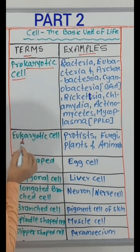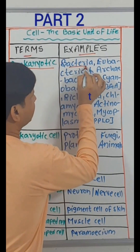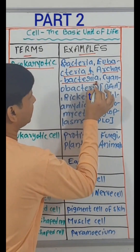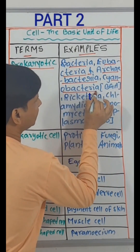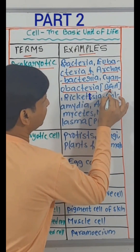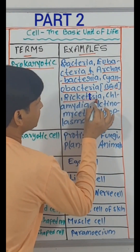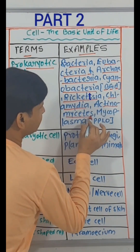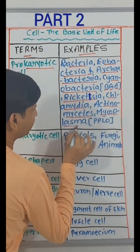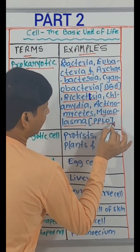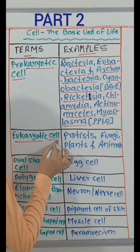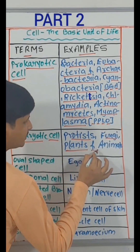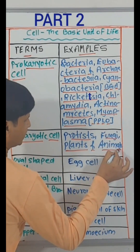Prokaryotic cell examples: bacteria — eubacteria and archaebacteria, cyanobacteria (that is BGA), Rickettsia, Chlamydia, Actinomycetes, Mycoplasma (that is PPLO). Eukaryotic cell examples: protists, fungi, plants and animals.